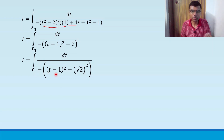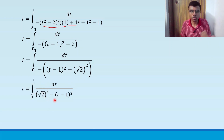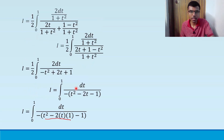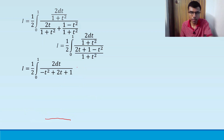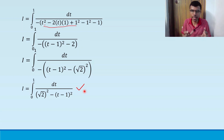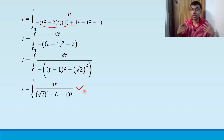Taking the minus inside, I get I = integral from 0 to 1 of dt / [(√2)² - (t-1)²]. This is now of the standard form. In the exam, if you feel too many steps are happening, you can jump from the completed-square form directly to this step, but I'd suggest writing at least some intermediate steps to show the examiner you understood the concept.